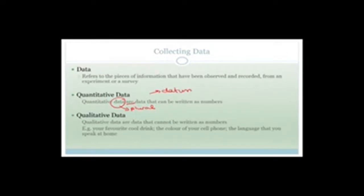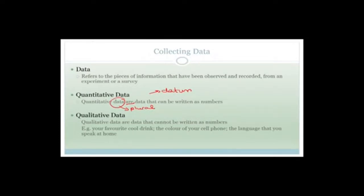Quantitative data are data that can be written as numbers. If I said to you, how many times a month you go watch movies, or how many pizzas have you eaten this year — those things are quantitative data. Qualitative data can't be written as a number, so it gives you more of an idea of something. For example, your favorite cool drink, the color of your cell phone, the language you speak at home, your eye color, your hair color — anything not involving numbers. That is called qualitative data.